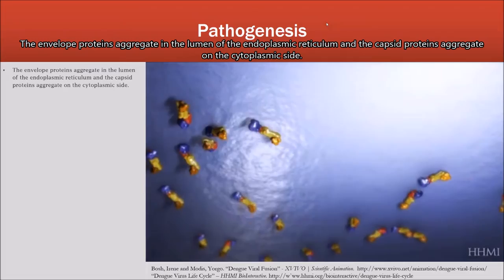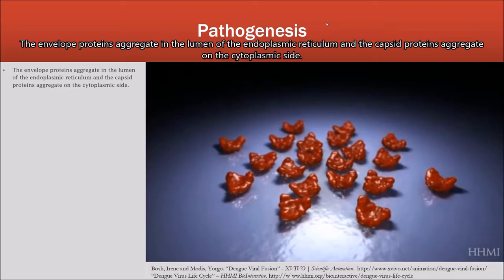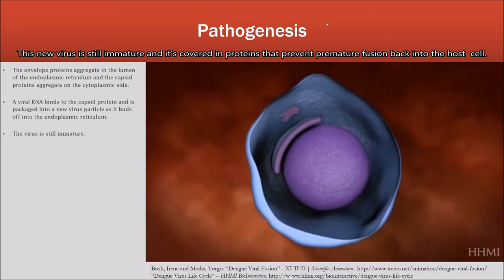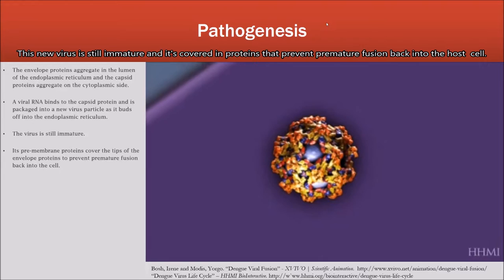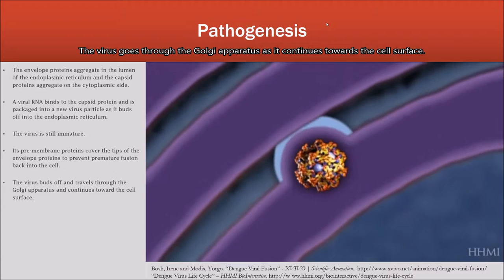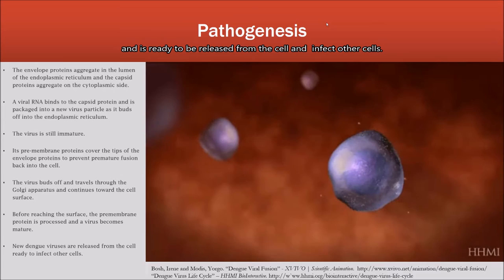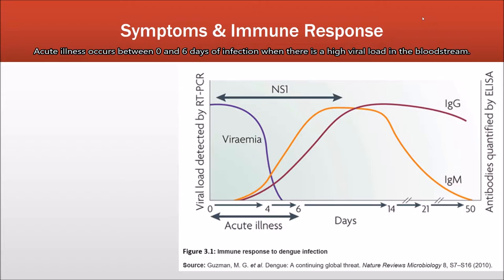The proteins segregate in the lumen of the endoplasmic reticulum and the capsid protein segregates on the cytoplasmic side. The viral RNA binds to the capsid protein and is packaged into a new virus as it buds into the endoplasmic reticulum. This new virus is still immature and is covered in proteins to prevent premature fusion back into the host cell. The virus goes through the Golgi apparatus as it continues toward the cell surface, where the premature proteins are processed, the virus becomes mature, and is ready to be released from the cell to infect other cells.